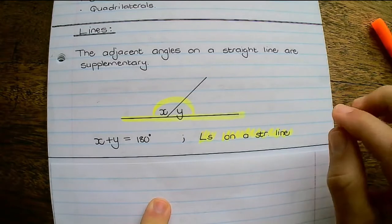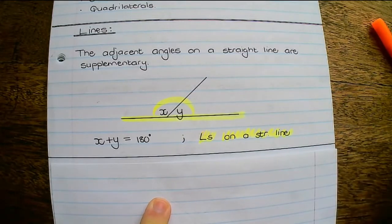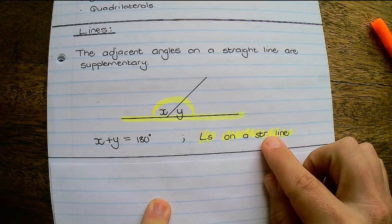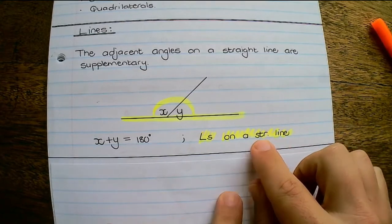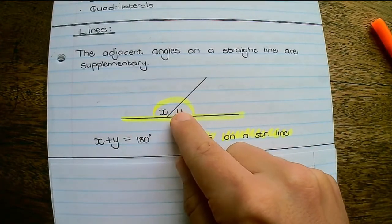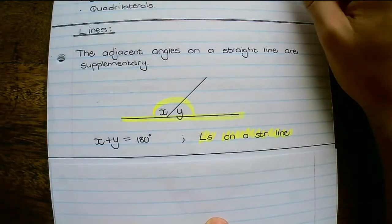You don't need to say 'supplementary' or 'add up to 180'. You just say 'angles on a straight line', and that's referring to the property of these angles adding up to 180 degrees.